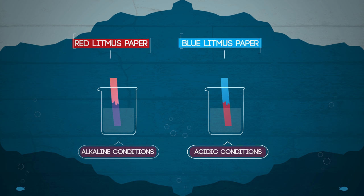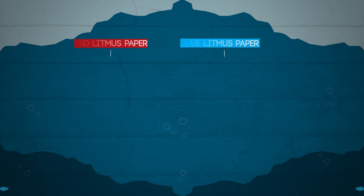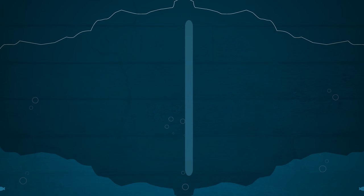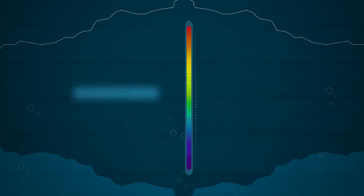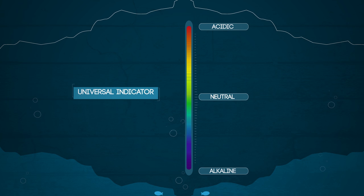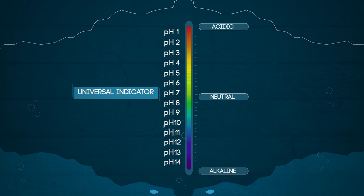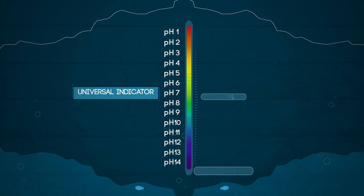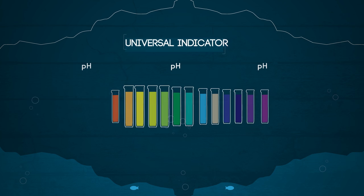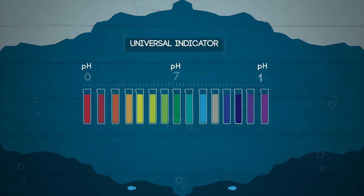However, litmus paper only tells us whether something is acid or alkaline, but it does not tell us how acidic or alkaline a substance is. For this we have the pH scale and a universal indicator. Universal indicator is a mixture of different indicators or dyes which has many different colour changes and so shows us the pH value of the solution.